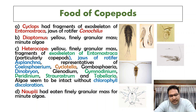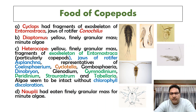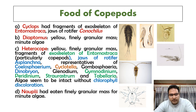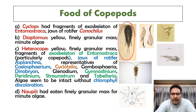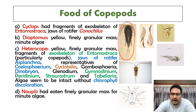Copepods are larger planktons — somewhat larger than rotifers and cladocerans. A prime example is Cyclops. Cyclops is the best example of a copepod. When the digestive tract of Cyclops was examined, fragments of the exoskeleton of Entomostraca and Conochylus were found, showing that parts of organisms remained undigested.